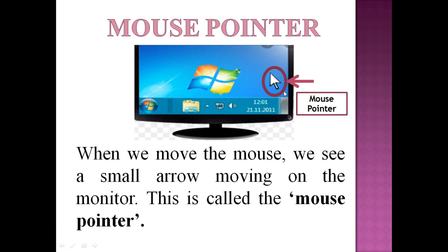This is called the mouse pointer. When we move the mouse on the table, then the mouse pointer is also moving. It is moved in the same direction as you move the mouse.